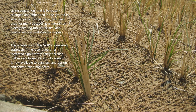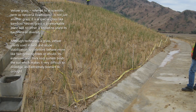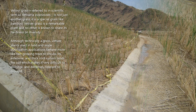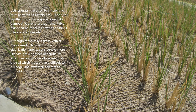Vetiver grass, referred to in scientific terms as Vetiveria zizanioides, is not just another grass — it is a special grass. Like bamboo, vetiver grass is a remarkable plant, and no other is known to share its hardiness or diversity. Although technically a grass, vetiver plants used in land and slope stabilization applications behave more like fast-growing trees or shrubs.